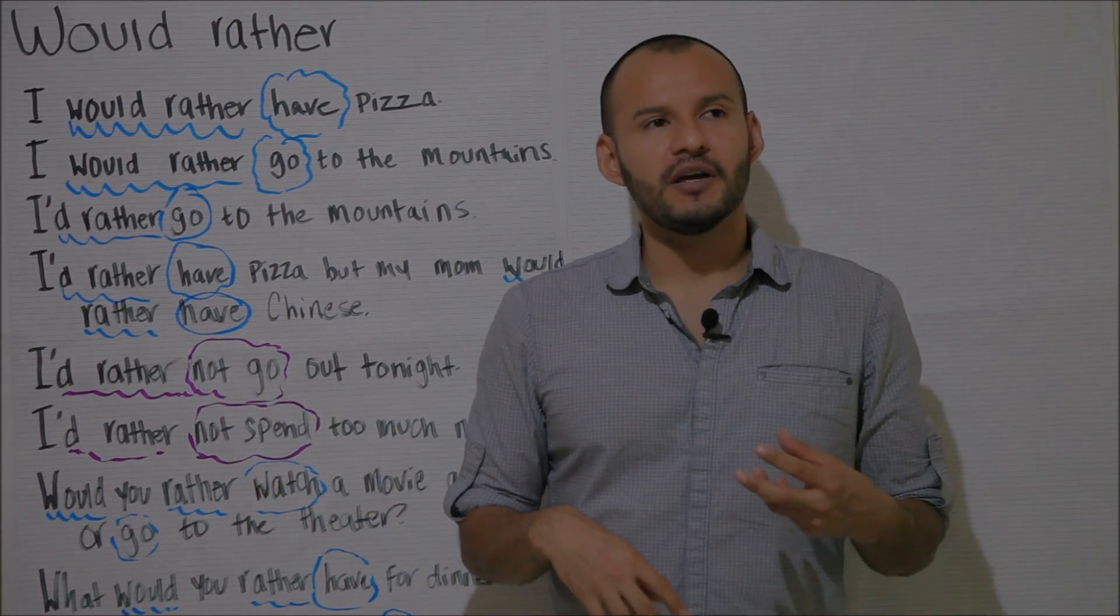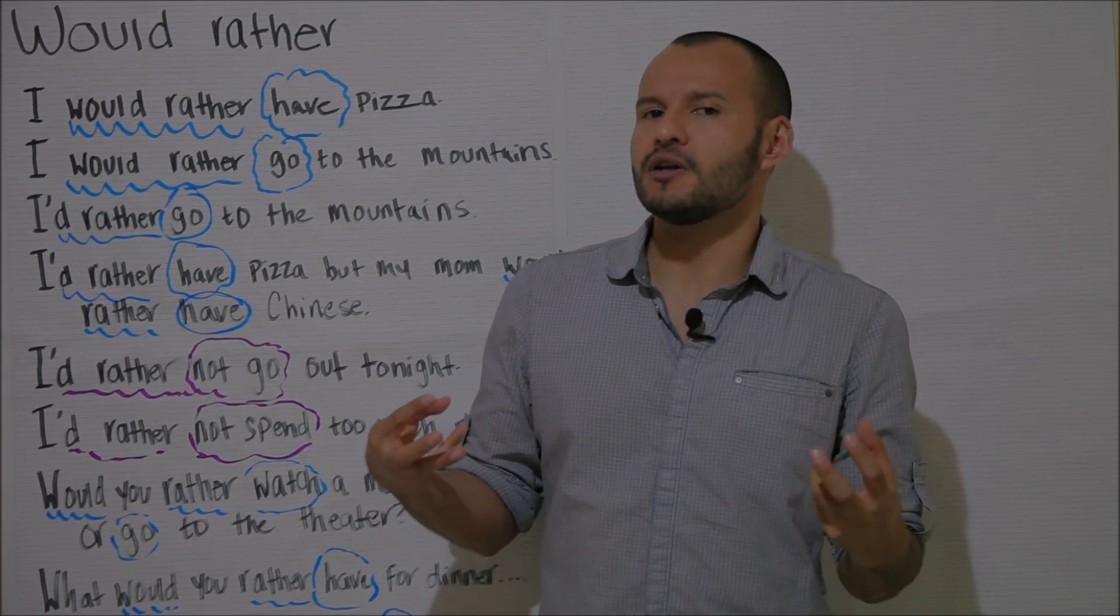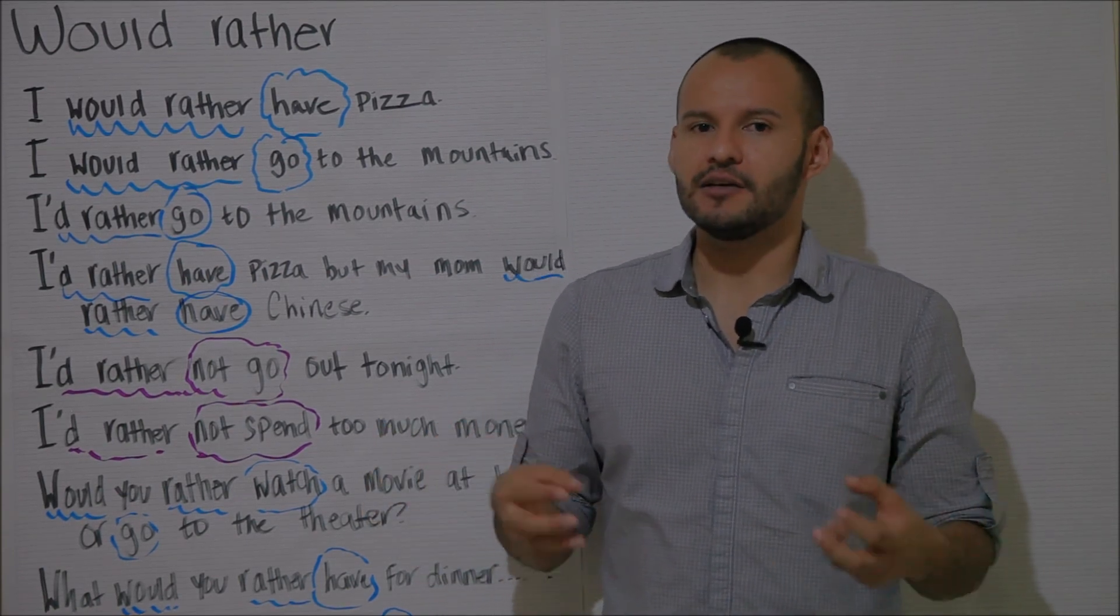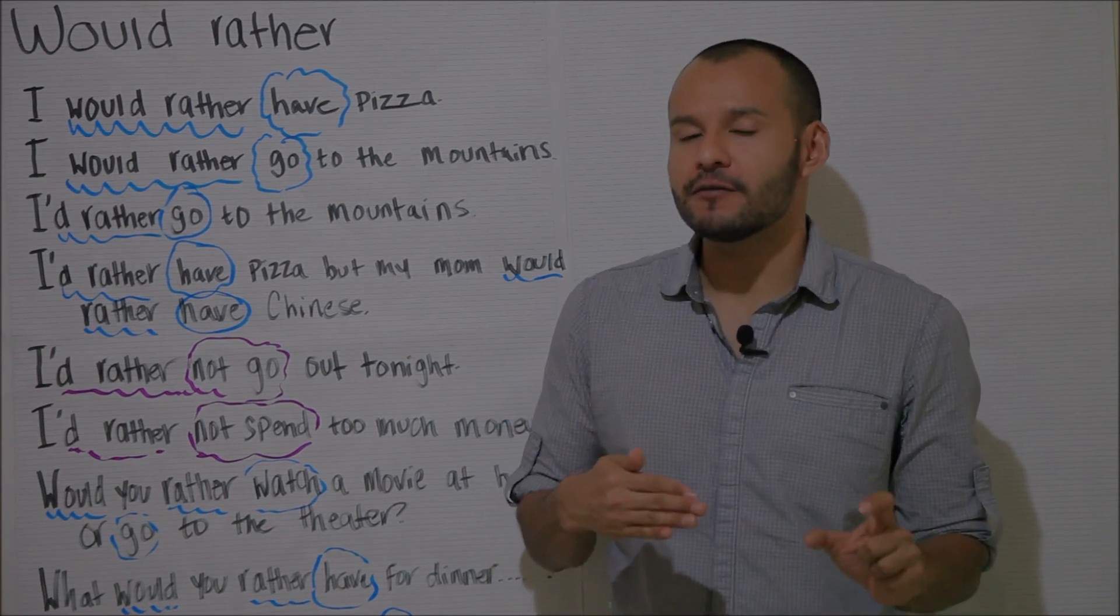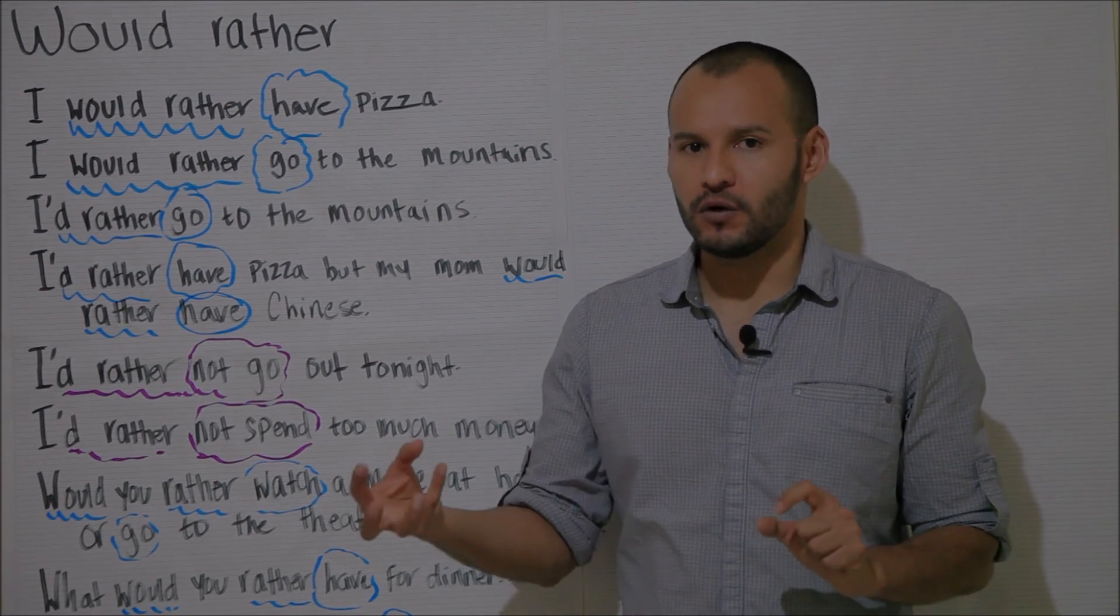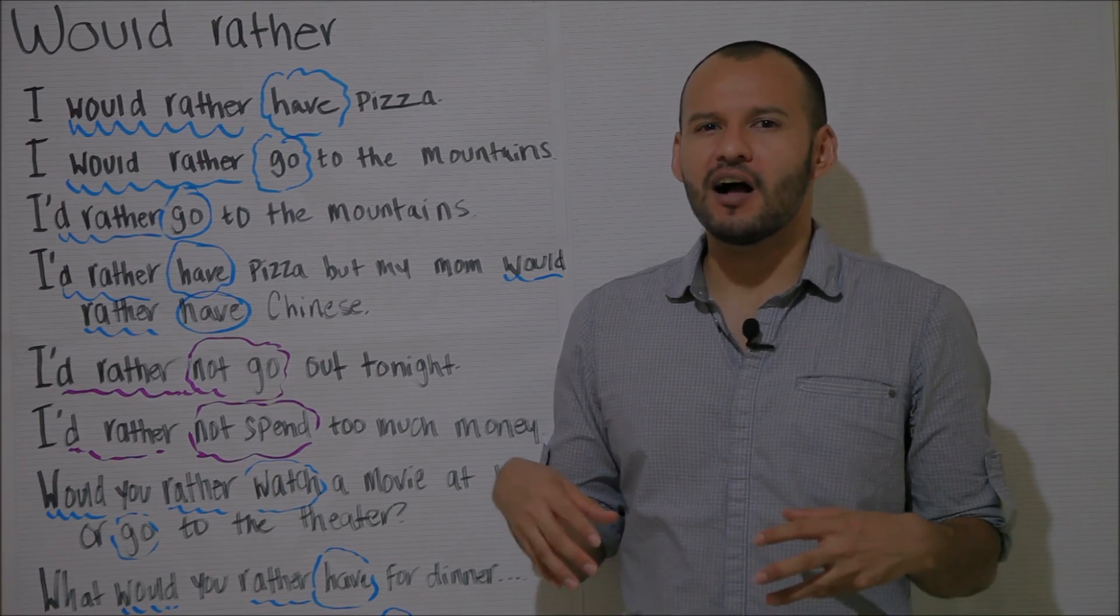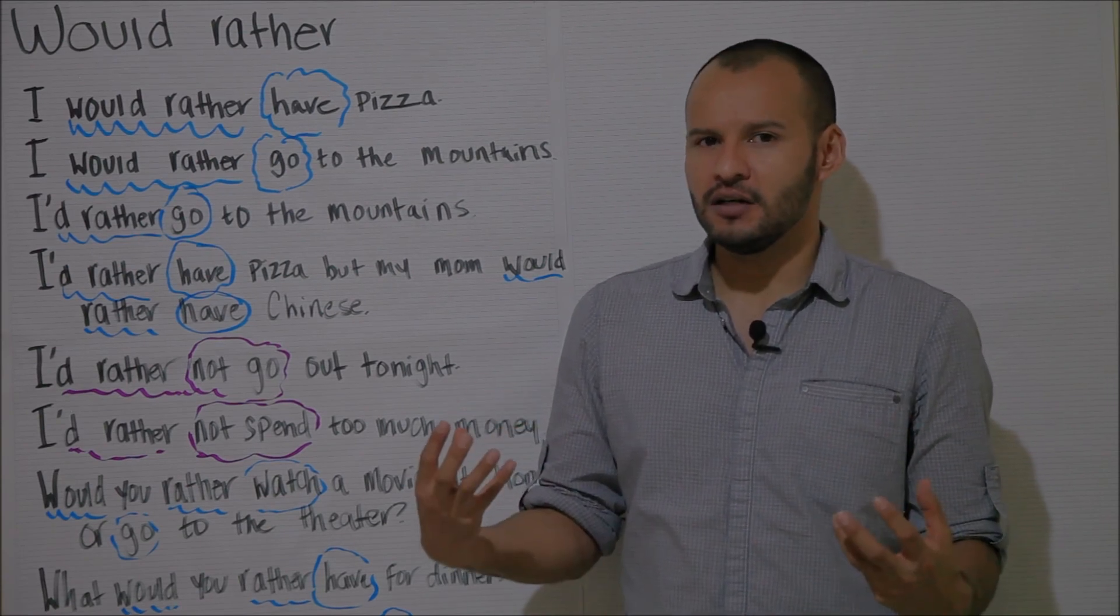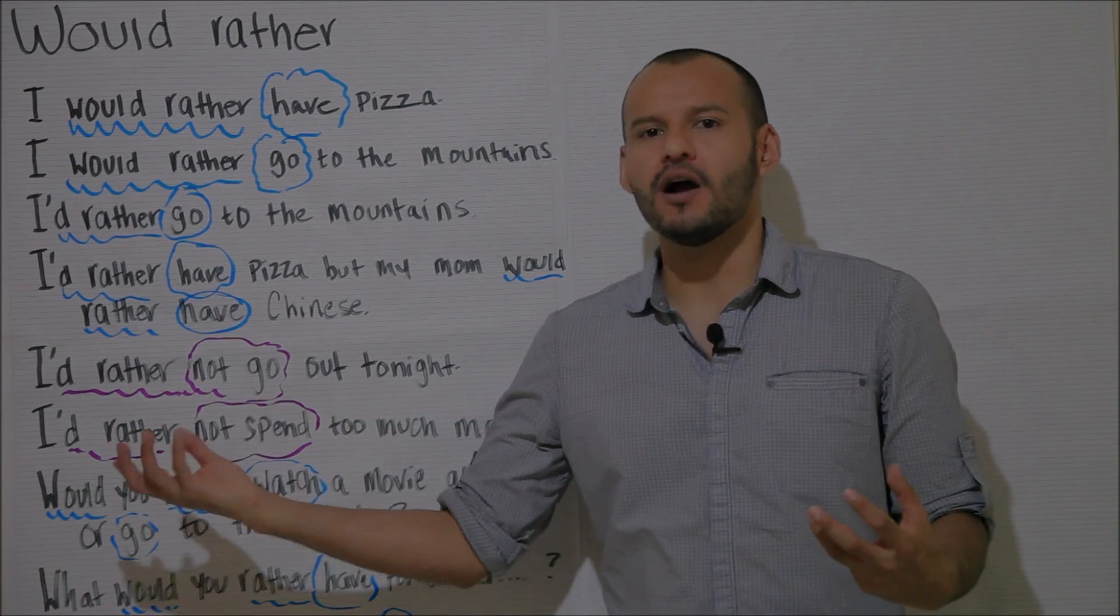In the negative form it might also be a little bit confusing because it's probably not what you expect. Basically you use the word not before the main verb and after the word rather, not after the word would. So basically in the negative form you would say, I'd rather stay home tonight, I'd rather not go out.